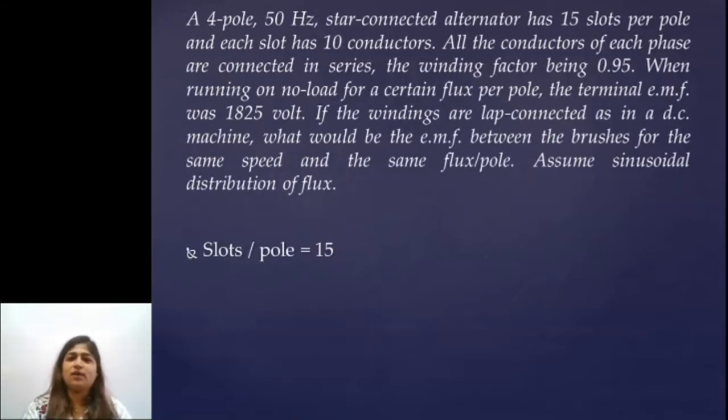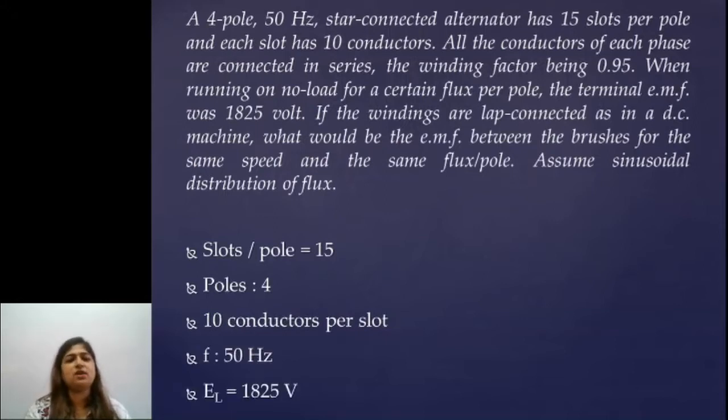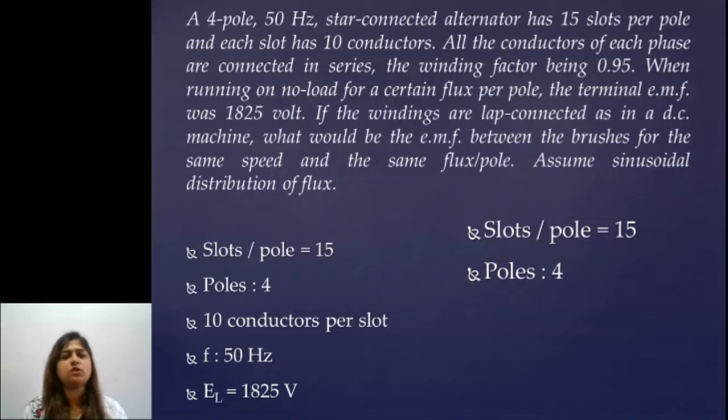Let's proceed to solve this problem. I'll write down the given data. Here slots are not given but slots per pole are given which is 15. Number of poles are 4 so you can get the value of slots easily from this. 10 conductors per slot, frequency is 50 Hz. When you are given with EMF, terminal EMF means EMF between two terminals, which means it is always line EMF, not phase EMF. So line EMF is given as 1825 volts. We are going to first find total number of slots which is 15 into 4 equals 60.